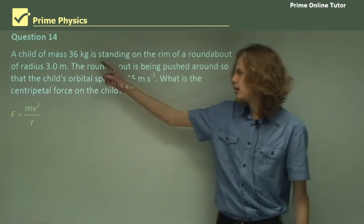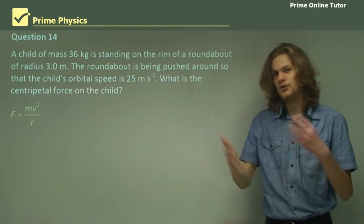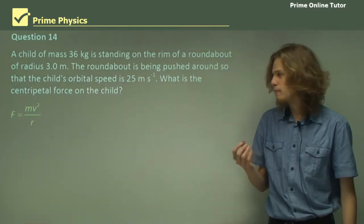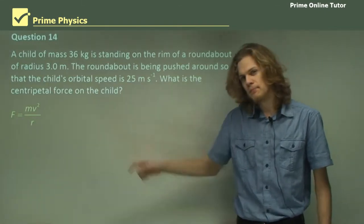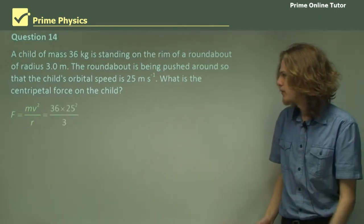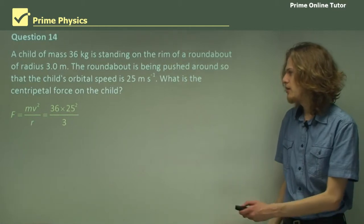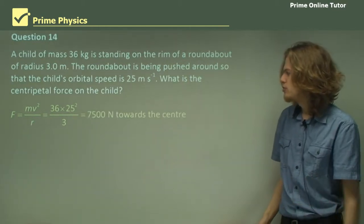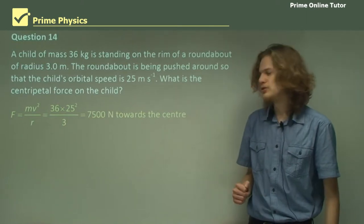Well, we have the mass of the child. We have the radius of the circular motion, or the radius of the circular path. We have the speed, which will be v. So all we need to do is substitute those in. Now our equation looks something like this. We can use a calculator to evaluate that. It turns out to be 7,500 newtons towards the center.